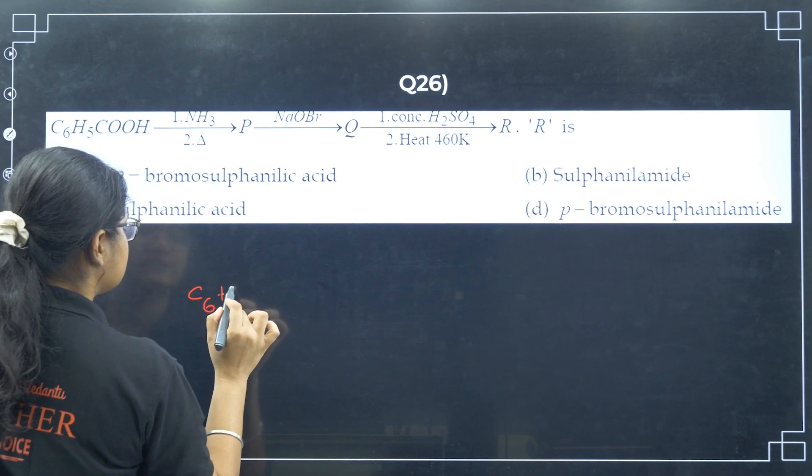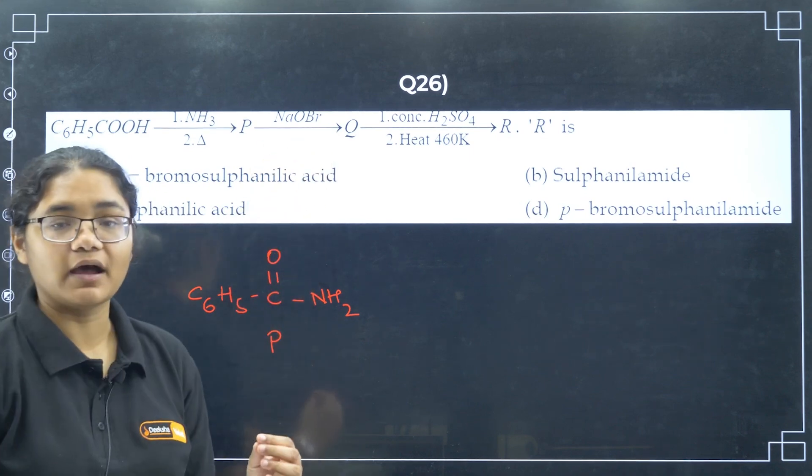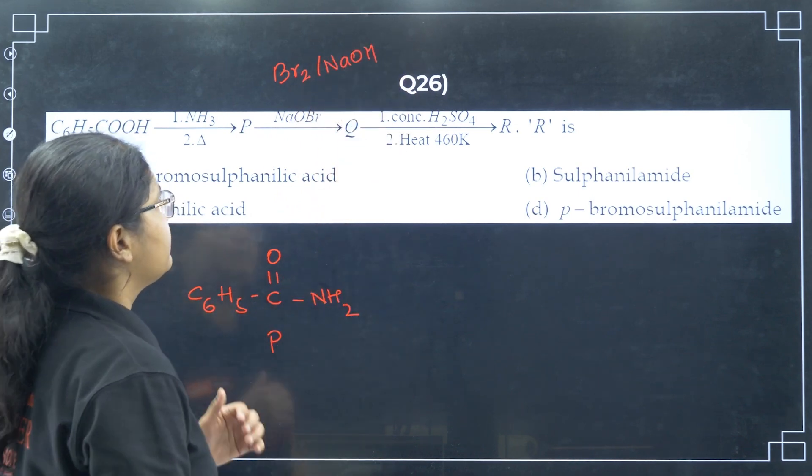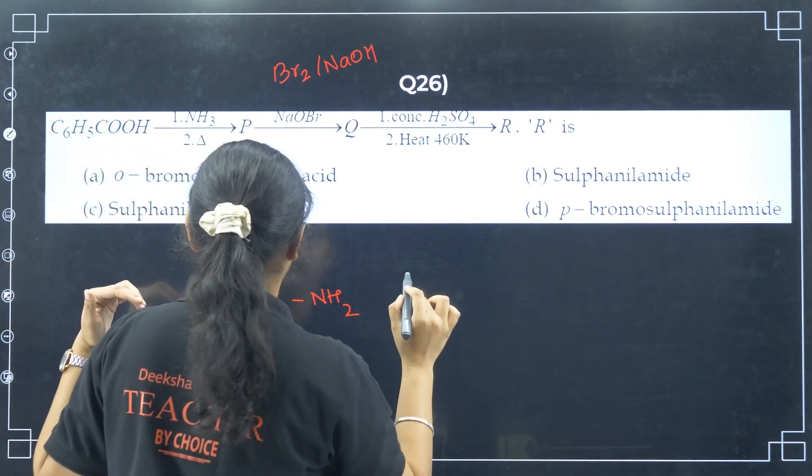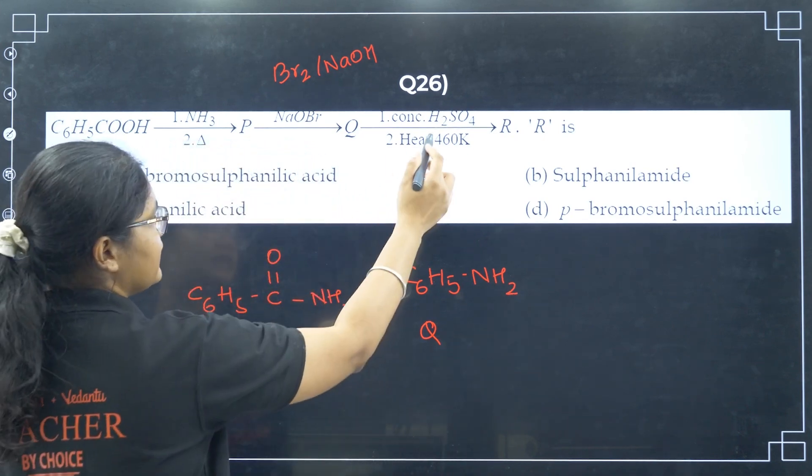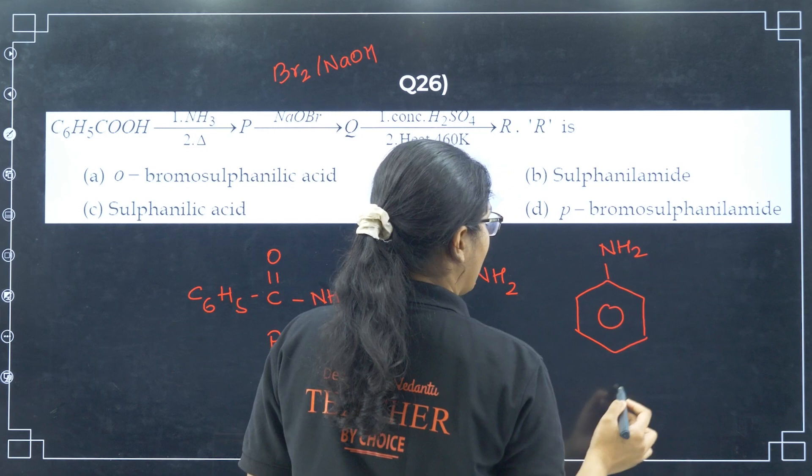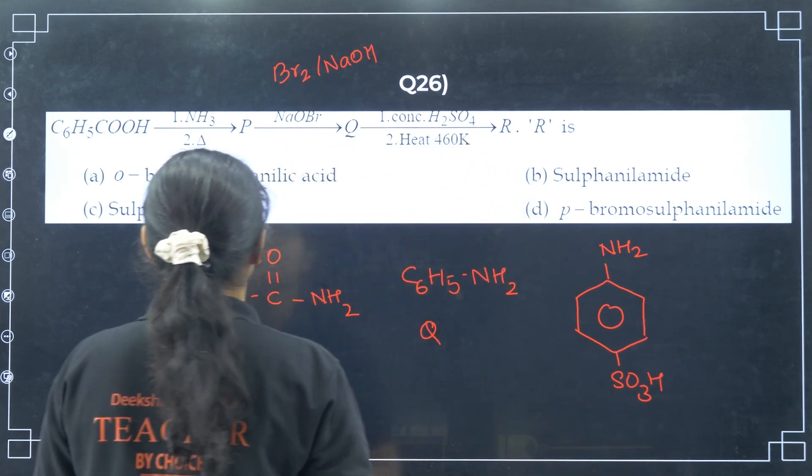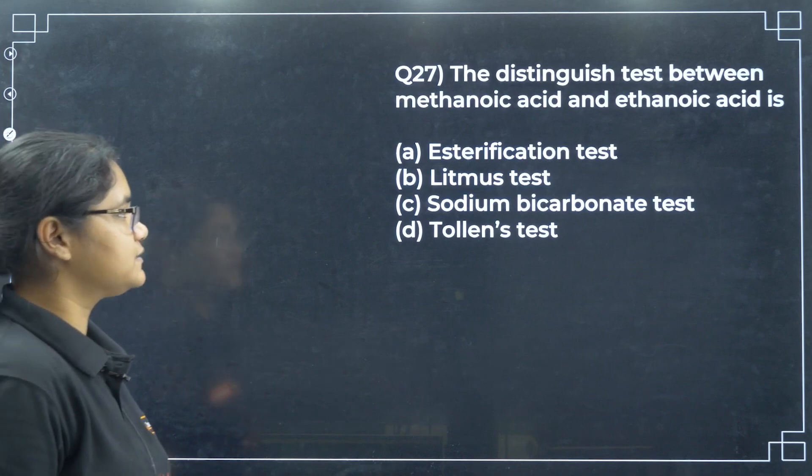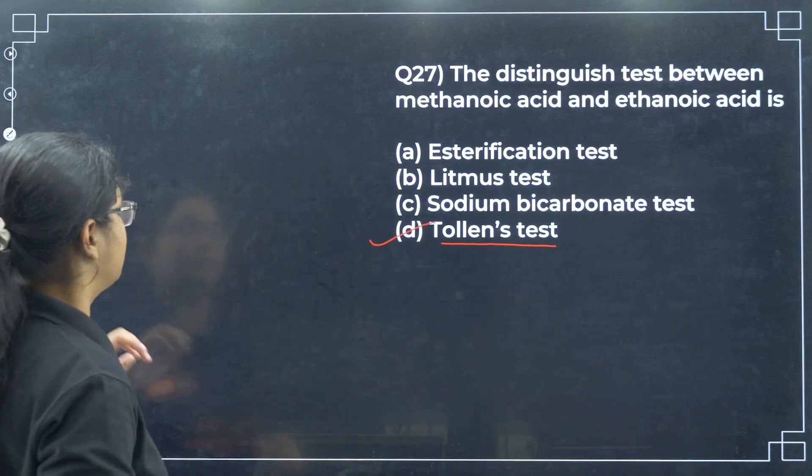Next, if I see this compound C6H5-CO-NH2, this is my P. When I treat it with NaOBr, that is Hoffmann bromamide degradation. You can write it as Br2 and NaOH. This will give NaOBr and HBr. So P will give C6H5NH2, that is your Q. When you heat it with concentrated sulfuric acid at this temperature, I will have C6H5NH2 and the para position will be replaced with SO3H. So this is sulfanilic acid. Option C here.